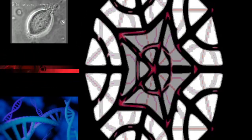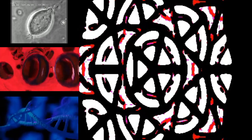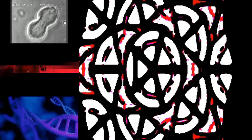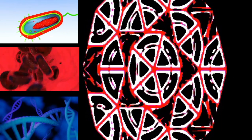The mitotic phase is a relatively short period of the cell cycle. It alternates with the much longer interphase, where the cell prepares itself for the process of cell division. Interphase is divided into three phases: G1 (first gap), S (synthesis), and G2 (second gap).